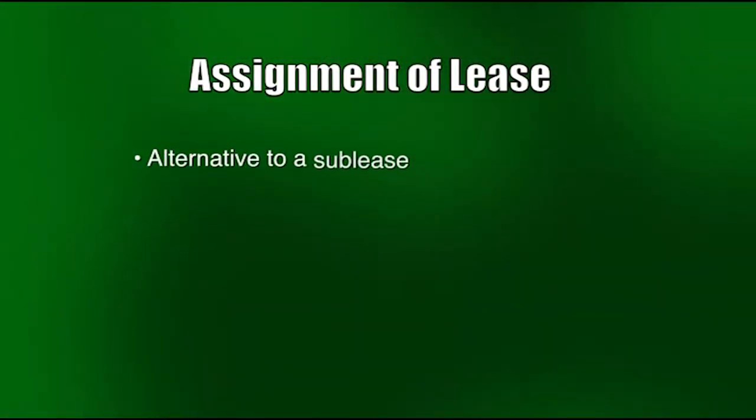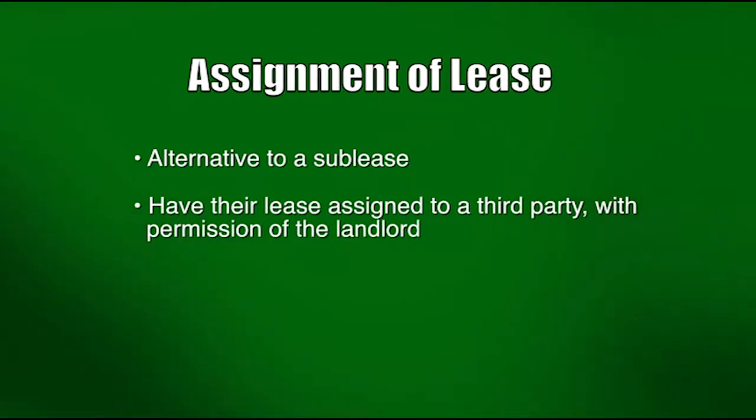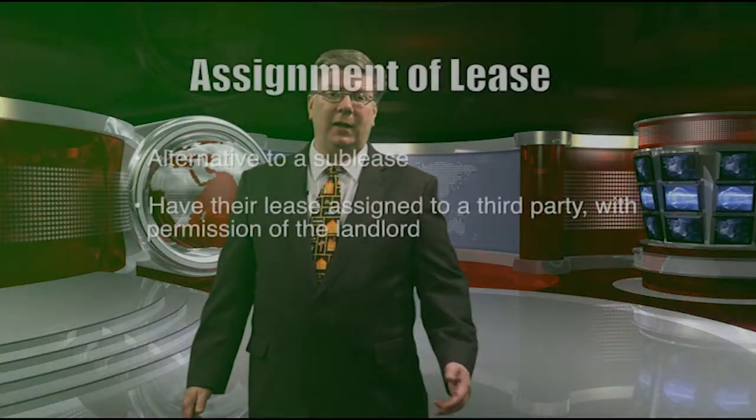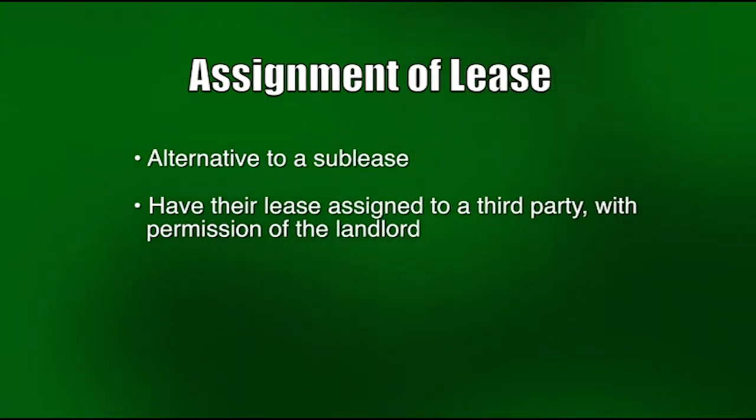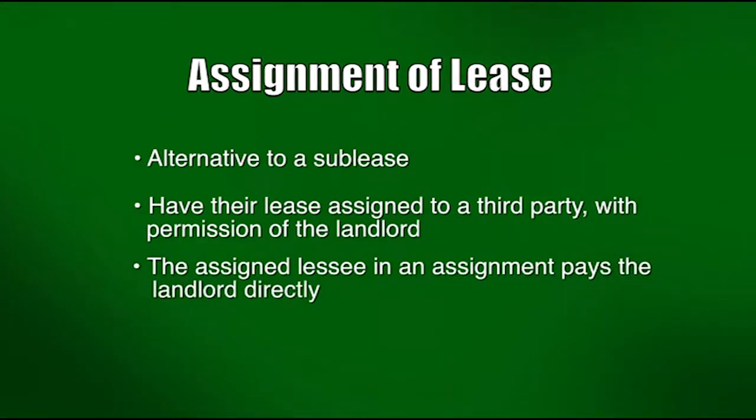An assignment of lease is an alternative to a straight sublease. A tenant may assign their lease to a third party with the landlord's permission — this transfers the space to another business for the remaining term. Unlike a sublease where the subtenant pays the original tenant who pays the landlord, in an assignment the assignee pays the landlord directly, effectively becoming a new tenant. The original tenant relinquishes all interest in the lease, though the landlord generally retains recourse against the original tenant unless they agree to write a release.